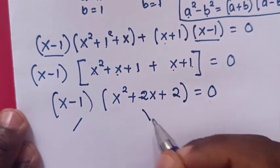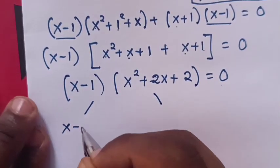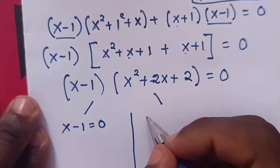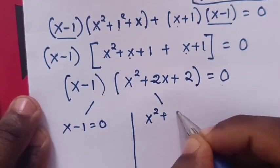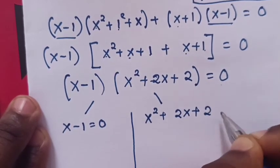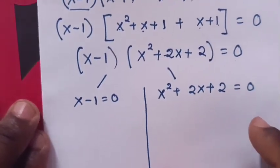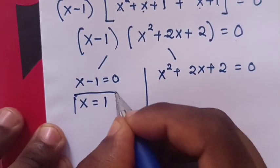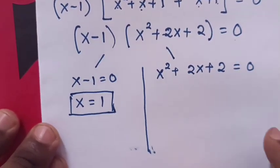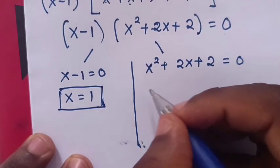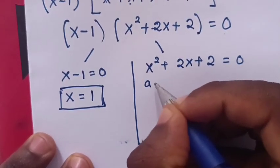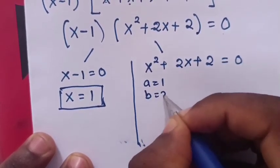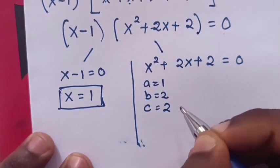Now we have two cases. Case one: x minus 1 equals to 0. Case two: x squared plus 2x plus 2 equals to 0. From the first case, x equals to 1. This is one of the solutions for x. Then from the quadratic equation, a is 1, b is 2, and c is 2.